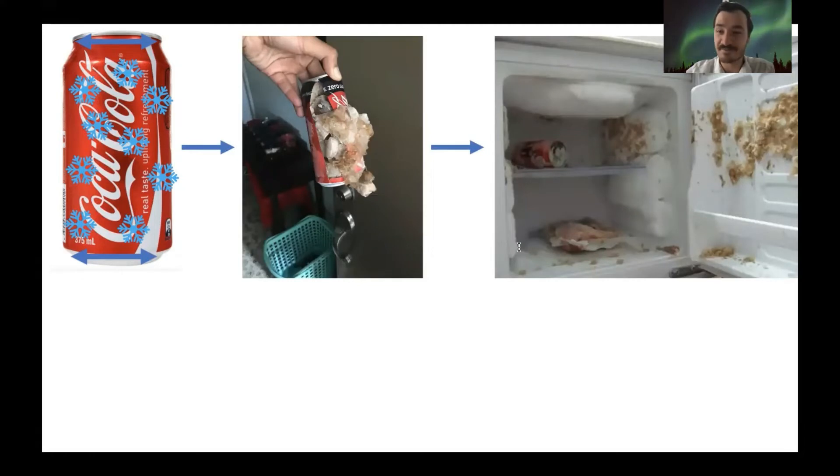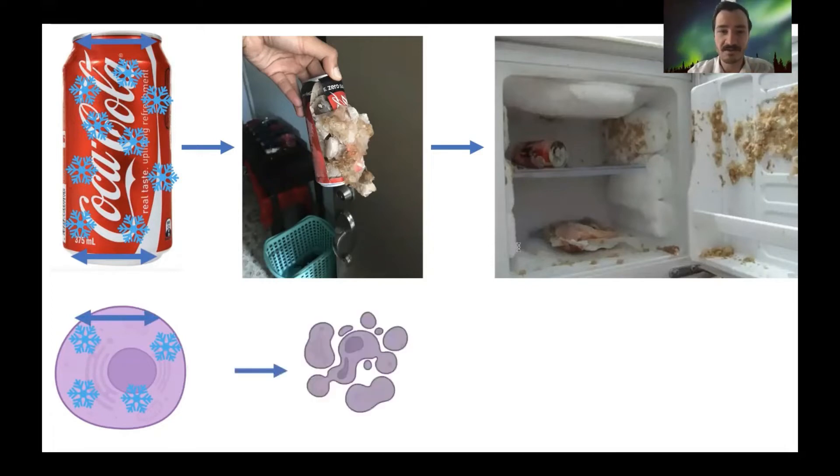The exact same process happens inside cells when they experience low temperatures. Ice begins to form and that pressure begins to push out on the cell's membranes. When they can no longer hold that pressure, the cell bursts resulting in very quick cell death. This is by far the most dangerous aspect of cryopreservation and therefore the most important problem to overcome.